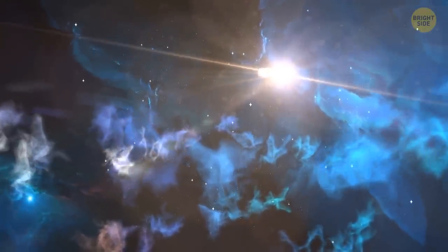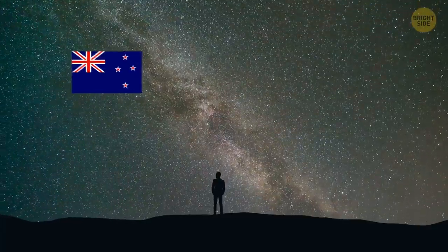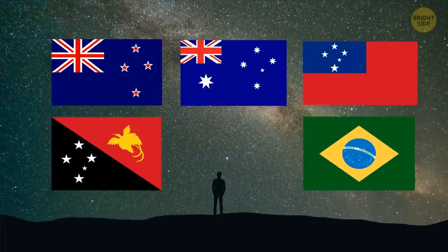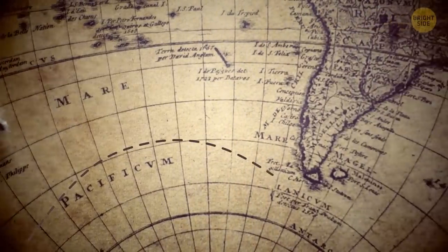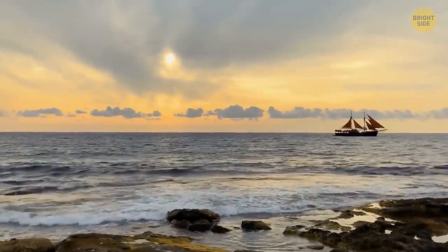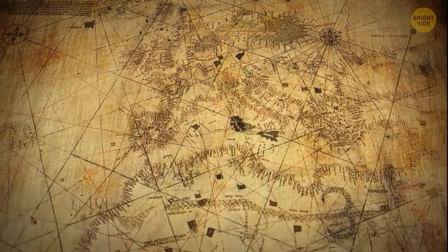Crux is portrayed on the flags of several sub-equatorial countries of the Southern Hemisphere. New Zealand, Australia, Samoa, and Papua New Guinea, all in the South Pacific, as well as Brazil in the South Atlantic. These vastly different geographical locations are essential for unraveling discrepancies between the modern constellations and the secret star map, as we shall soon see.